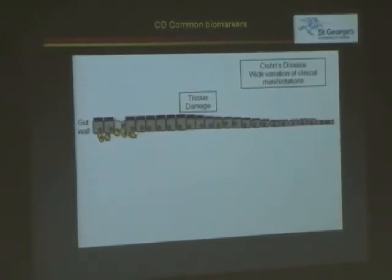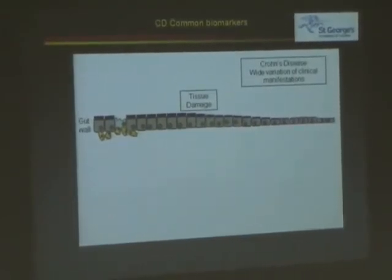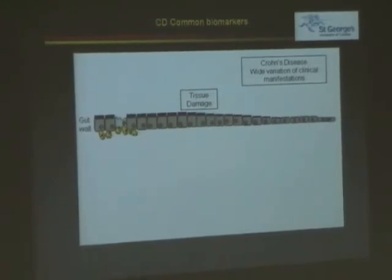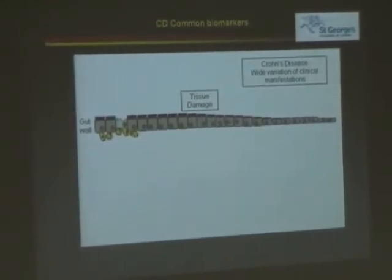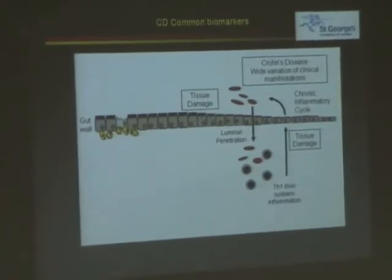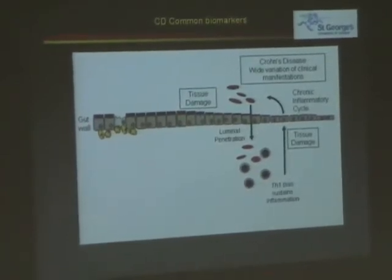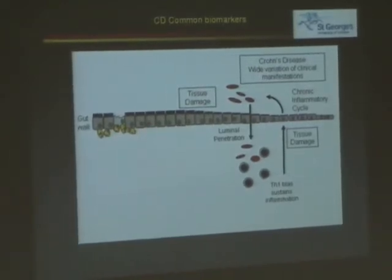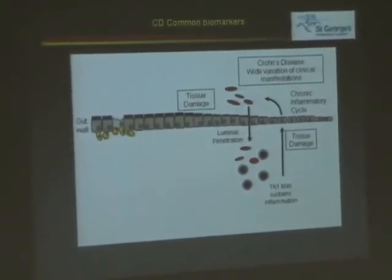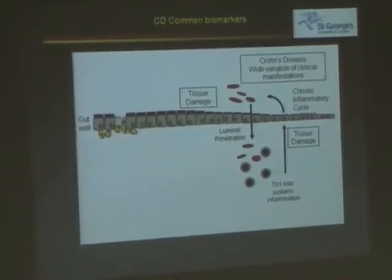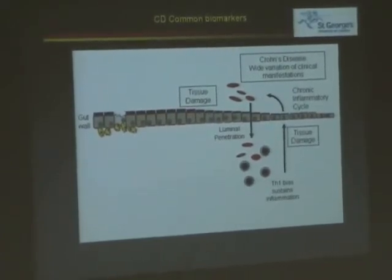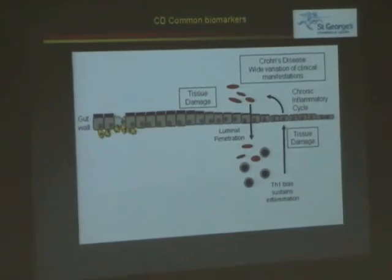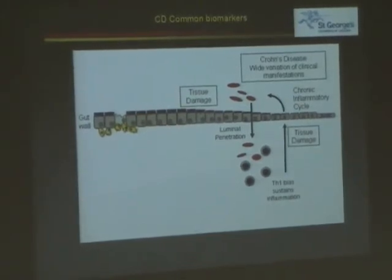We have a wide variation of clinical manifestations, and we haven't got anything common we can say is in all of our patients that we can measure specifically. Now we know Crohn's disease starts with tissue damage — perhaps producing a leakier gut wall. Organisms from the lumen can enter into the gut wall, penetrate, and they are presented by a Th1 bias that exists in our animal models, but also in our Crohn's patients. This Th1 bias sustains inflammation and increases cytokine responses, producing more tissue damage.